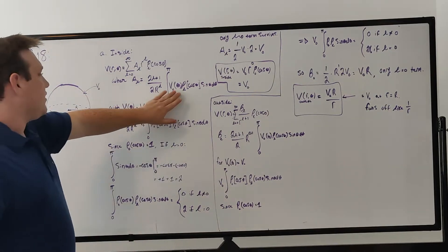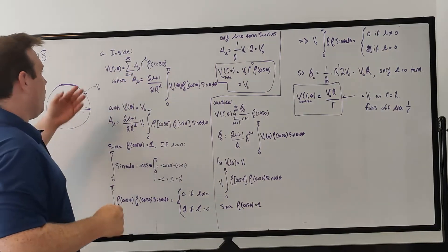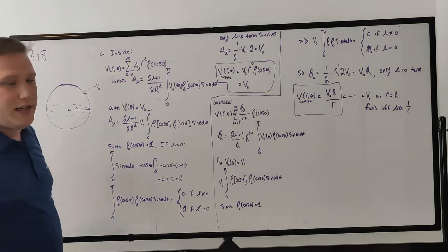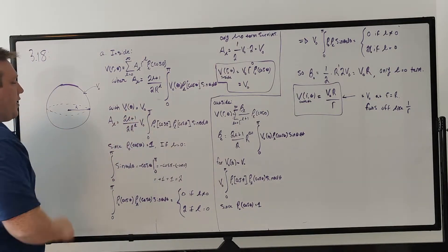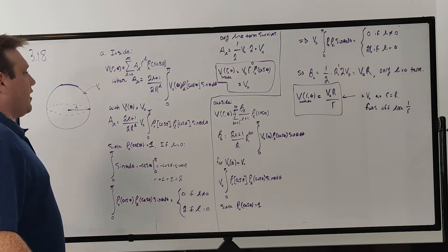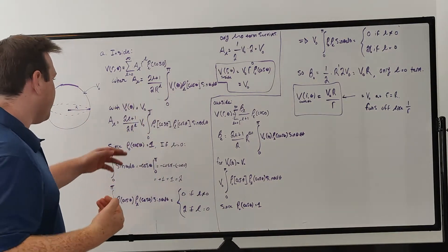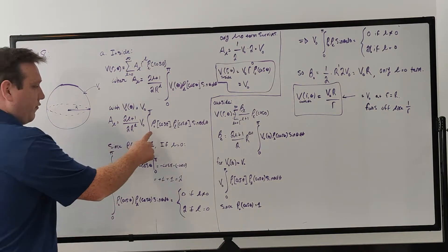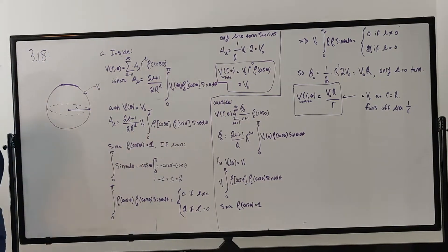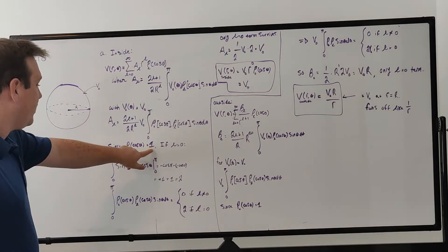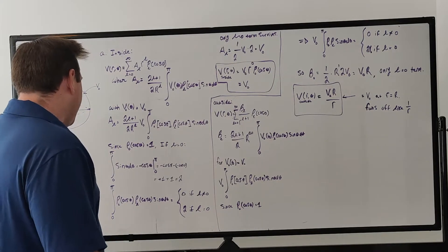What we need to figure out is which terms in this series contribute. Given that the potential is constant along the surface of the sphere, we plug that into the integral. Since it's a constant, it comes out of the integral. So we just have this integral where we've multiplied by the zeroth Legendre polynomial, because P_0 equals 1 — multiplying by 1 doesn't change anything and is valid.